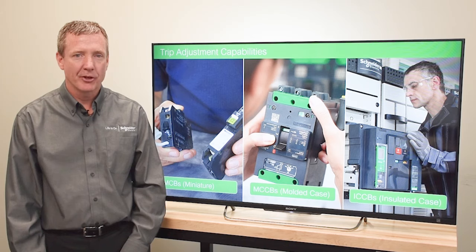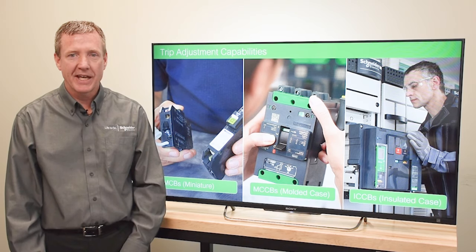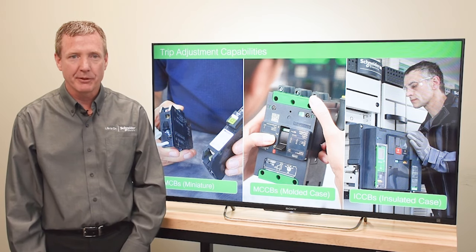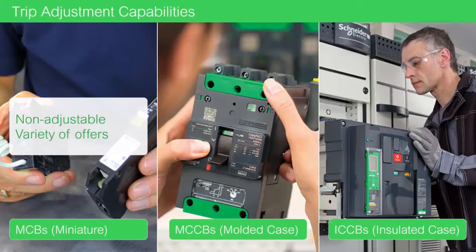On some time-current curves, you will see that you can adjust the tripping responses. For our residential miniature circuit breakers, adjustable tripping is not offered.